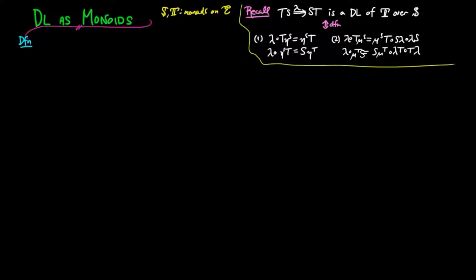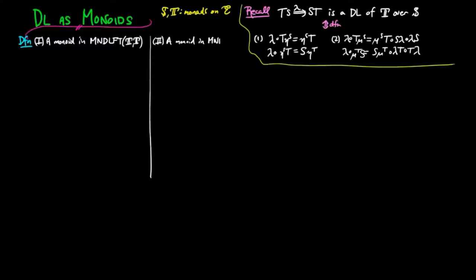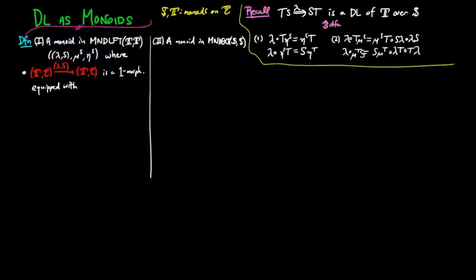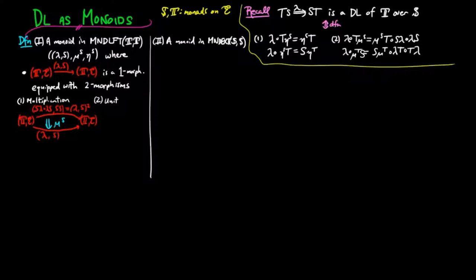Now, a monoid in the endomorphism category of the monad T in monad lifts and a monoid in the endomorphism category of the monad S in monad extensions are nothing but internal monoids in the respective monoidal categories of their endomorphism categories. Precisely, a monoid in the endomorphism category of T in monad lifts is a triple (lambda S, mu S, eta S), where lambda S is a one-morphism in monad lifts equipped with two morphisms in monad lifts: mu S, called the multiplication from lambda S squared to lambda S, and eta S, called the unit from the identity to lambda S, such that the associative law and the unit law hold. In other words, the two following diagrams commute.